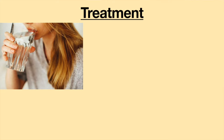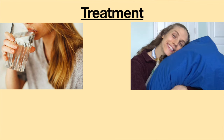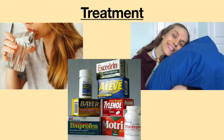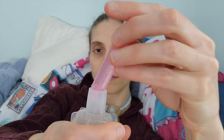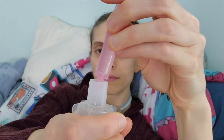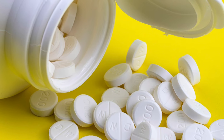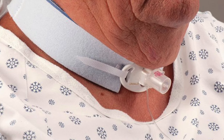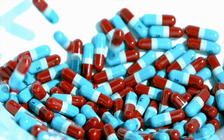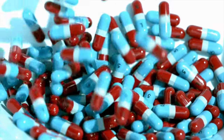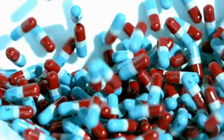Treatment for tracheitis usually includes drinking plenty of water, getting lots of rest, and taking over-the-counter pain medicine for pain and fever. Using bronchodilators such as inhalers or running medicine through a nebulizer may help open up the airways. Antibiotics may or may not be given. Since bacterial infections are common with people with tracheostomy tubes, some doctors may automatically prescribe antibiotics, while other medical providers will only give antibiotics if the sputum culture shows bacteria is causing the infection.